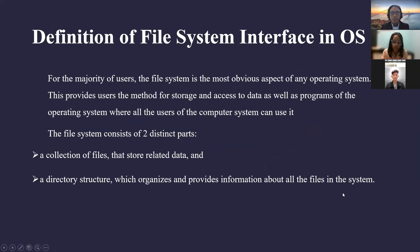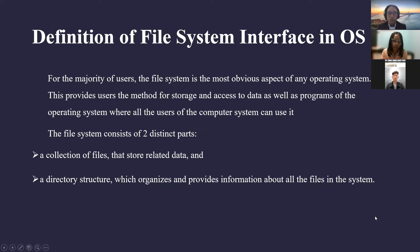The first topic is basic theory. We begin with the definition of file system interface in OS. For the majority of users, the file system is the most obvious aspect of any operating system. It provides users the method for storage and access to data, as well as programs of the operating system that other users of the computer system can use. The file system consists of two distinct parts: first, a collection of files that store related data, and second, a directory structure which organizes and provides information about all the files in the system.